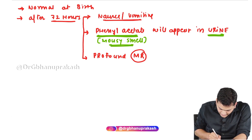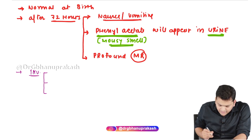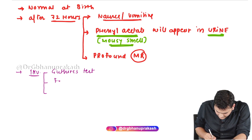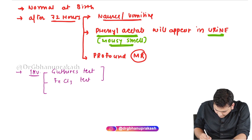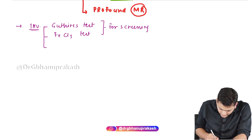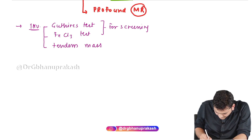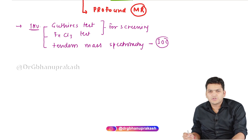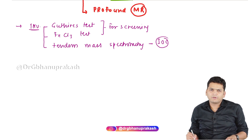When it comes to investigations, we have certain tests. The Guthrie test and the ferric chloride test are used for screening of phenylketonuria. For confirmation, tandem mass spectrometry is used, and it is considered the investigation of choice for phenylketonuria.